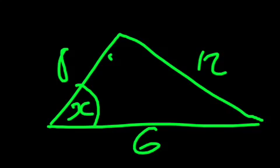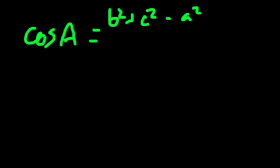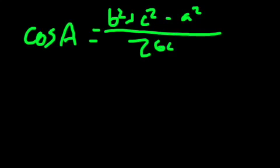So this one is a bit harder to remember. It is cos A, or in this case x, is equal to b squared plus c squared minus a squared, all over 2bc. But if you practice it every day, you should remember it.